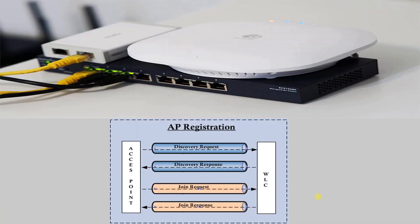Coming to the registration part, let's understand how an access point is connected to a wireless LAN controller. The AP registration to a WLC is a two-phase process: the discovery phase and the join phase. There are several steps the AP will go through in order to register with a WLC.